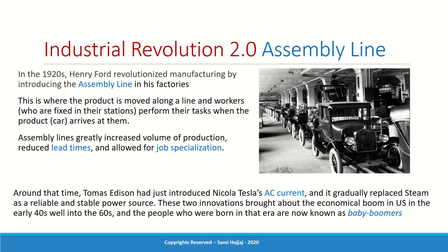Henry Ford developed the assembly line, whereby the production line itself is moving — products move along the line while stations of workers, equipment, and machines are stationary. Those stations apply their tasks: the welding area, the painting, the wiring, and so on. This led to a boom in production volume and quality, dramatic reductions in lead time, and job specialization — people specialized in welding, painting, or wiring, focusing on just that one job.